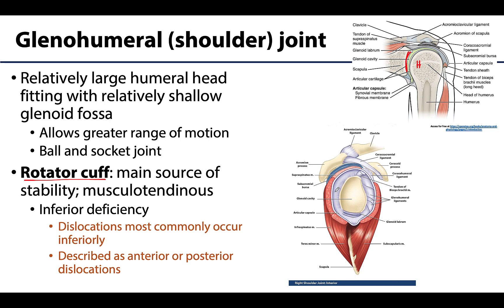The rotator cuff muscle bellies and tendons will almost completely encircle the shoulder joint. The rotator cuff is the dominant source of stability of the glenohumeral joint — less dependent on ligaments, though there certainly are many ligaments associated with this region. However, there is an inferior deficiency in this musculotendinous ring, making the inferior region of the shoulder joint inherently weaker, and it is in an inferior direction that most shoulder dislocations occur.